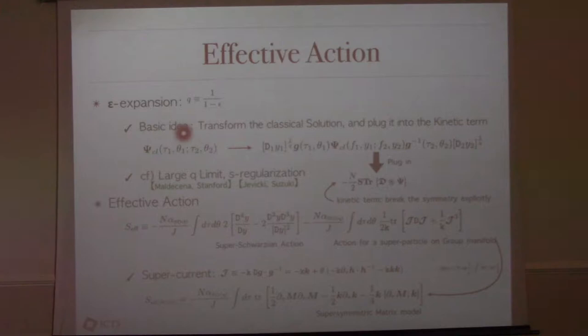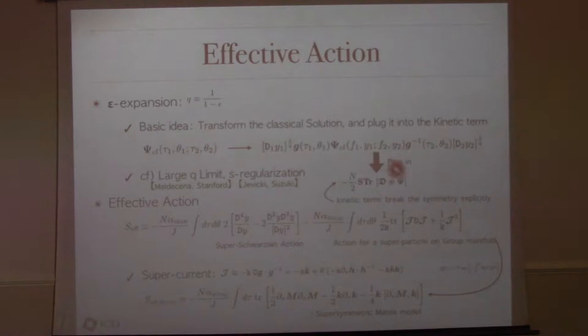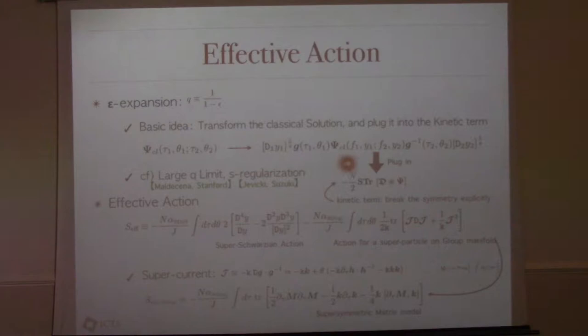The easiest way to obtain the effective action is the action method: take the classical solution, transform it using the super reparametrization and local SO(Q), then plug this transformed classical solution into the kinetic term which breaks the emergent symmetry. In the non-supersymmetric case there are divergences (log epsilon, 1/epsilon), but in the supersymmetric case such divergences cancel each other, so there are no divergences in this calculation.